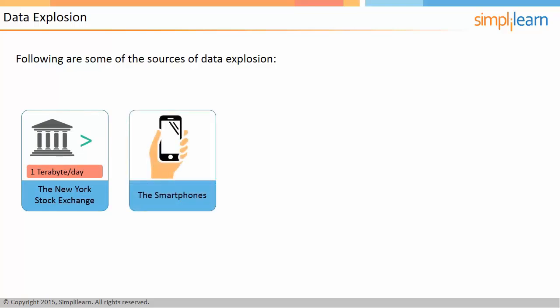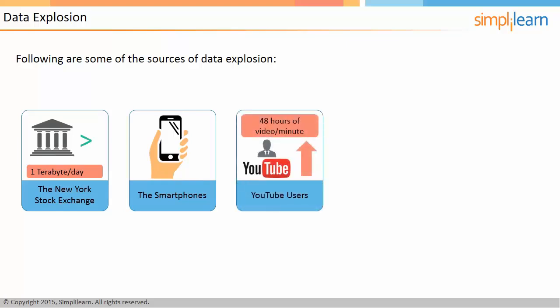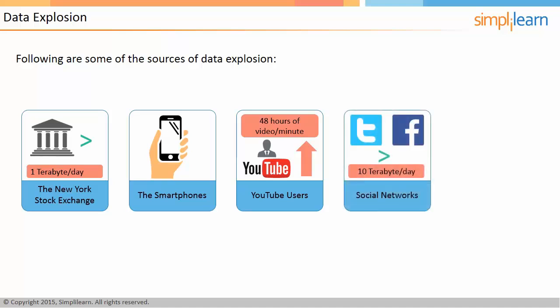Worldwide, there are approximately 5 billion mobile phones in use, of which nearly 1.75 billion are estimated to be smartphones. YouTube users upload more than 48 hours of video every minute — every second of HD video generates bytes 2,000 times more than that required to store a single page of text. Large social networks, like Twitter and Facebook, generate more than 10 terabytes of data daily.